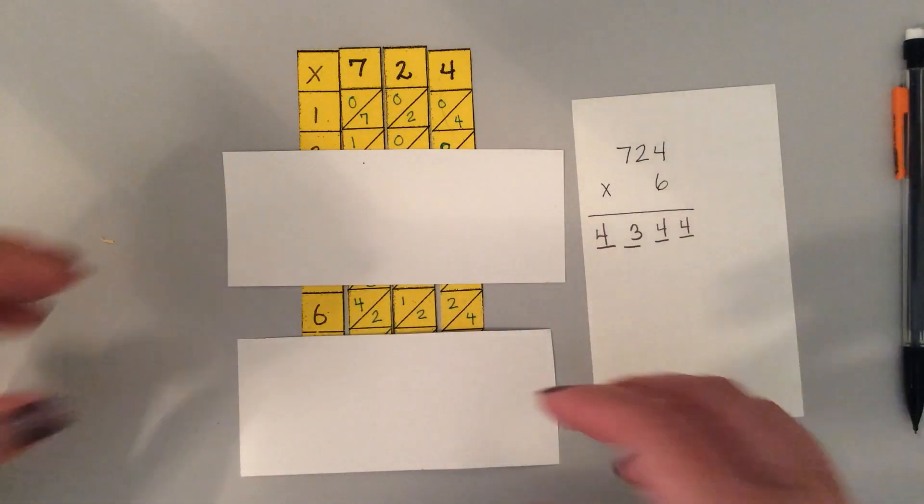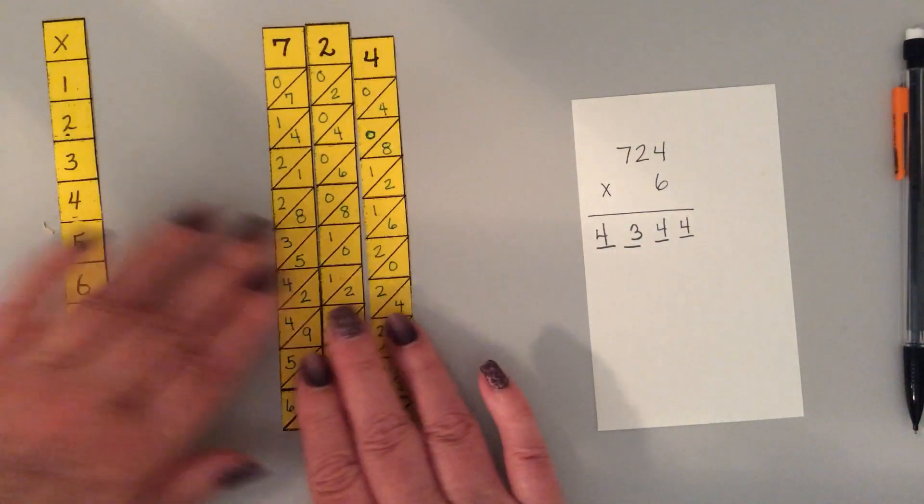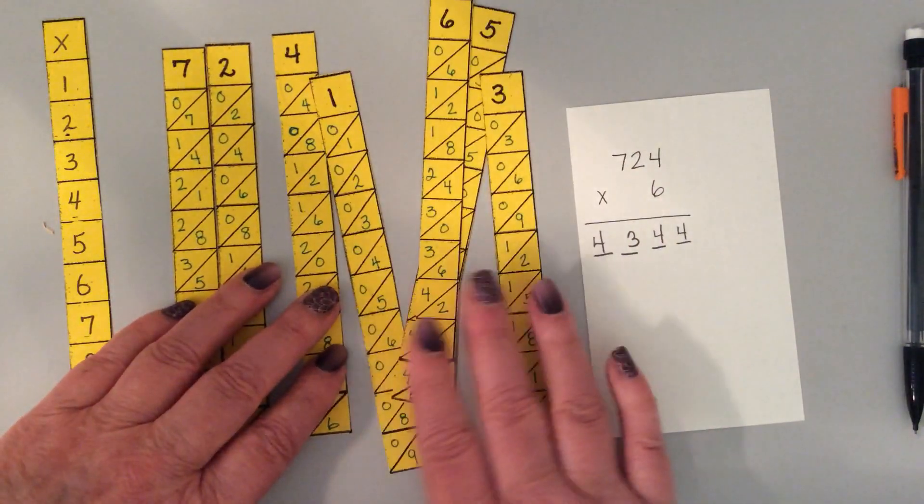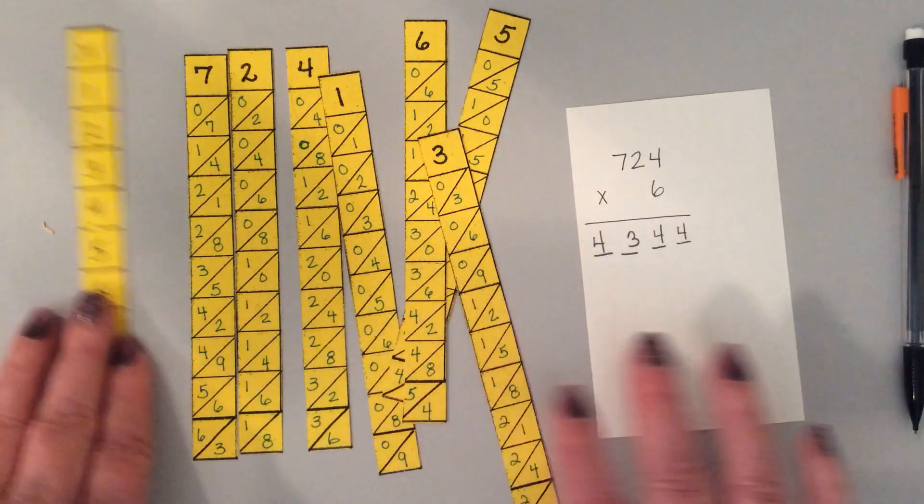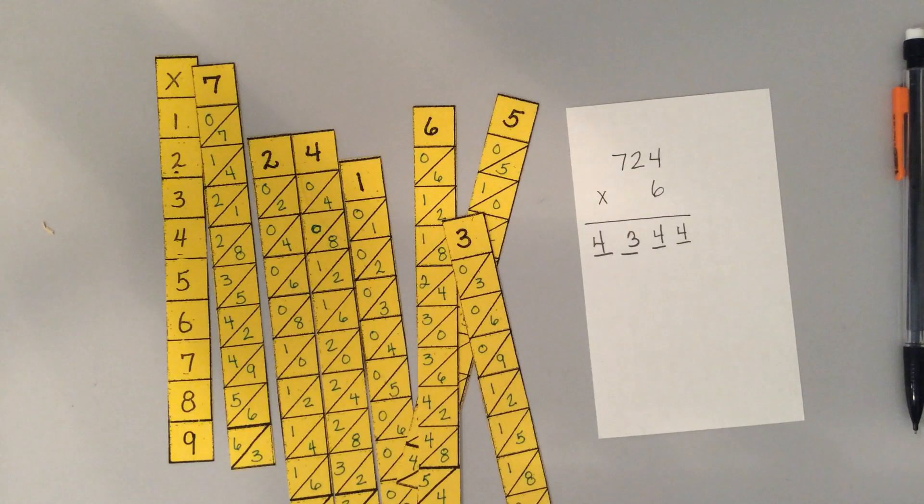Anybody can do Napier's bones. You just need a piece of paper and a pencil and scissors to cut them out, and you can play around with it. You can make any number that you have the bones to make and multiply, and then practice it. We'll work later on a different video on ways to do more complicated multiplication problems.